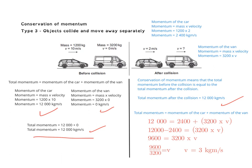For the final marks: one mark for writing 12,000 equals 2,400 plus 3,200v, and the final mark for rearranging to get a velocity of 3 metres per second. You can now try the type 3 conservation of momentum questions on your worksheet.